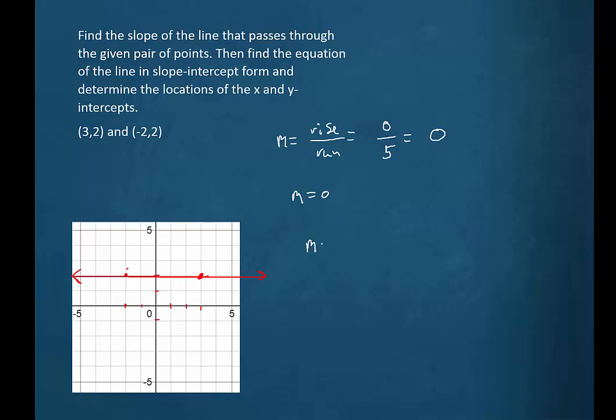We would find the same thing if we used the slope formula. Labeling these dots again, x1, y1, x2, y2, we would find 2 minus 2 over negative 2 minus 3. So 0 over negative 5, or in other words, 0, as we stated earlier.